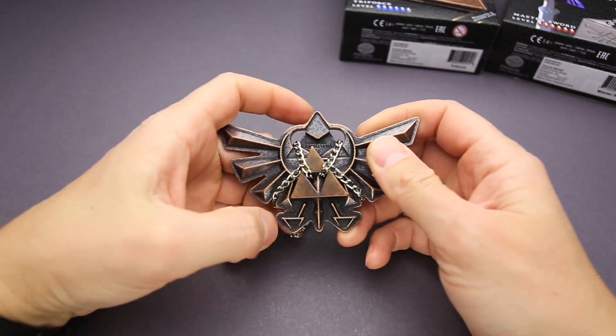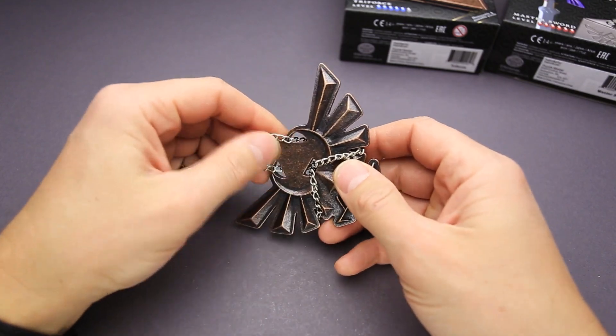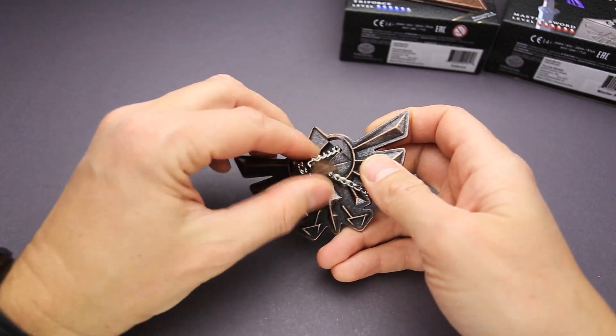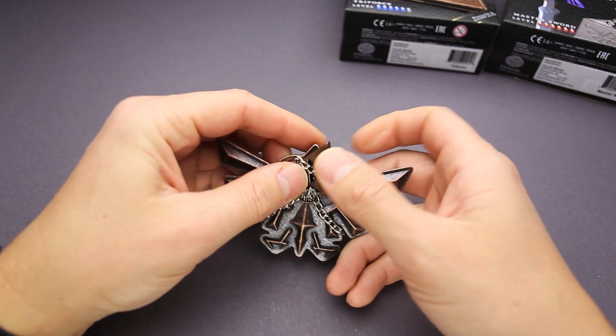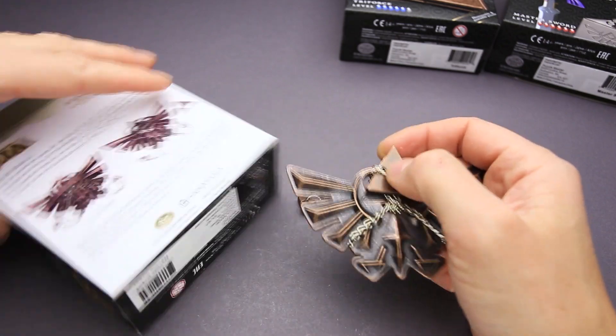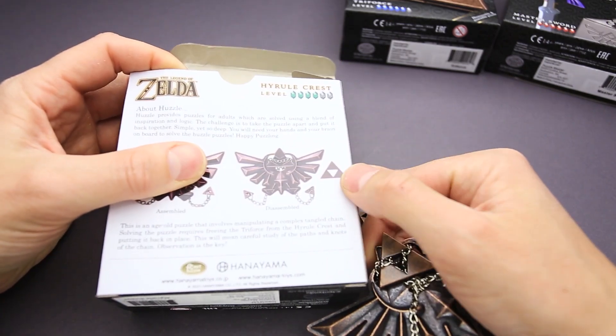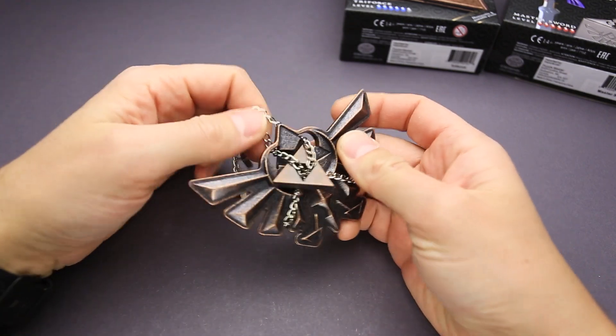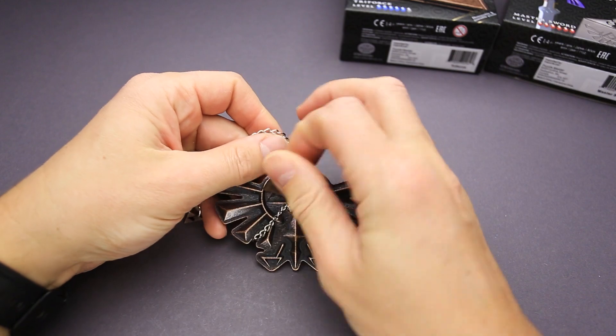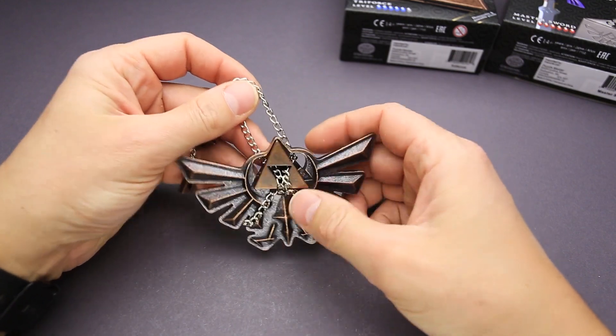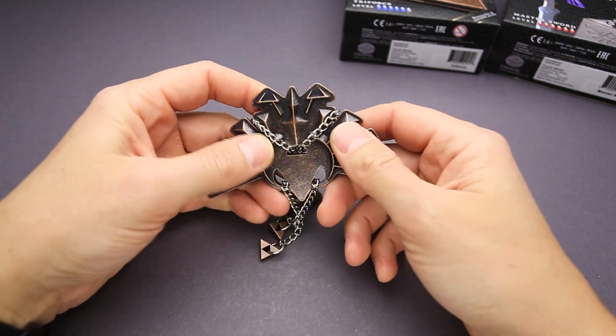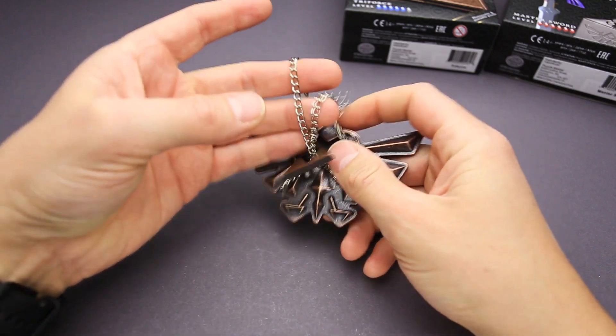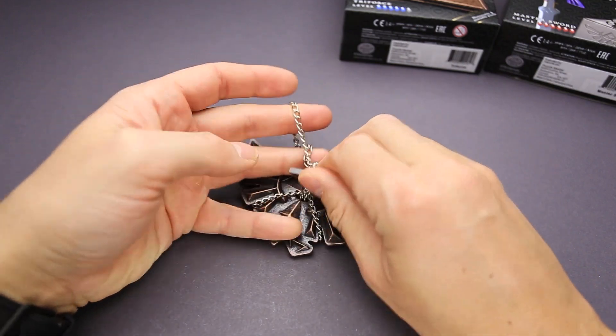Okay, so that's the first puzzle, Hyrule Crest. I have to remove this triangle, I guess. Let's check what the box says. Yeah, I have to remove the small triangle. Let's see. I think it will be like a classic spring puzzle. I have to do something with the chain in order to remove the triangle.